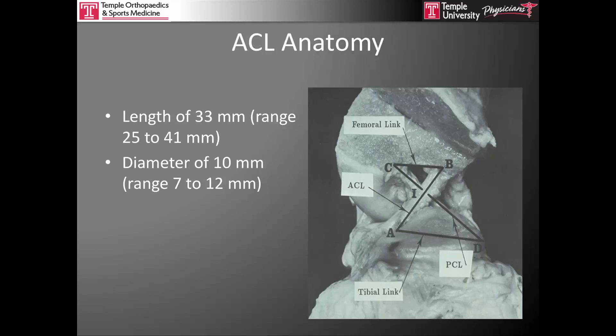In evaluation of the anatomy of the anterior cruciate ligament, this figure demonstrates the concept of a four-bar linkage between the anterior and posterior cruciates. The anterior cruciate is typically about 33 millimeters long from its femoral origin to its tibial insertion, with a range of 25 to 41 millimeters. Its average diameter is roughly 10 millimeters, ranging from 12 millimeters at the femoral origin to approximately 7 millimeters at its midpoint, giving it an hourglass shape.